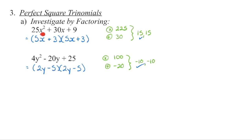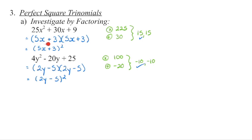When we have a perfect square trinomial, you'll notice that the outside product and the inside product always give the same value. You'll also notice that each of the factors is identical. So what we have is 5x plus 3 squared — that bracket times itself. And 2y minus 5 squared — that bracket times itself. This makes sense when we think about algebra tiles: if the length and the width are the same, we have a square, and the pieces arrange into a perfect square.